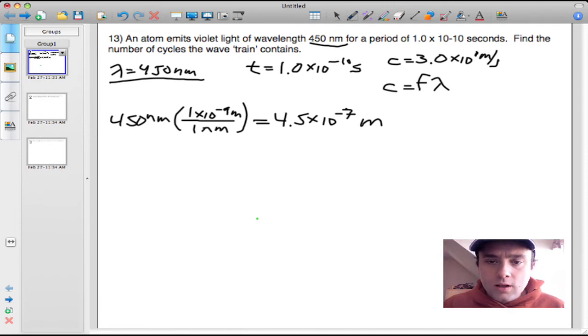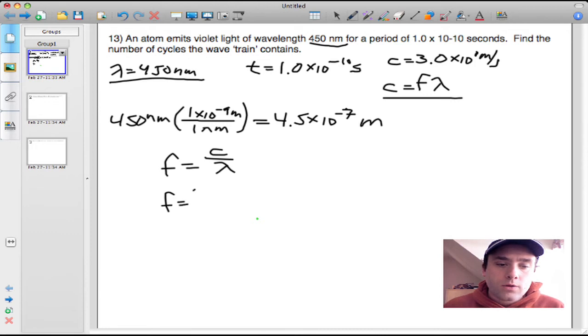I like to pre-solve this equation to make substitutions easier with the variable isolated. We're looking for frequency, so frequency equals c, the speed of light, divided by lambda, the wavelength. Making those substitutions: f equals 3.0 times 10 to the minus 8th divided by 4.5 times 10 to the minus 7th meters.